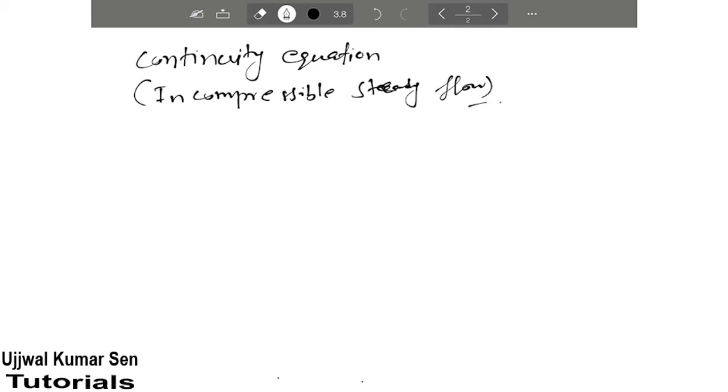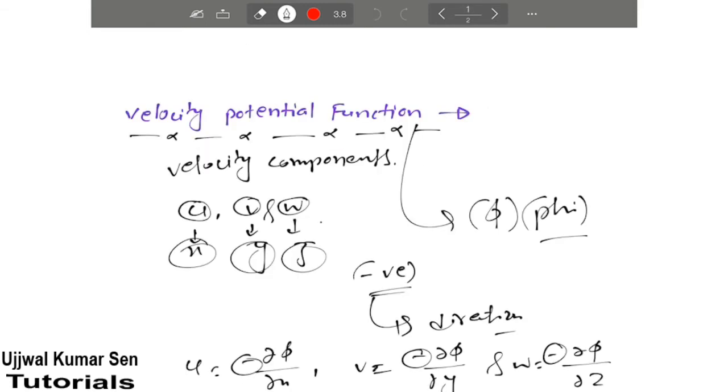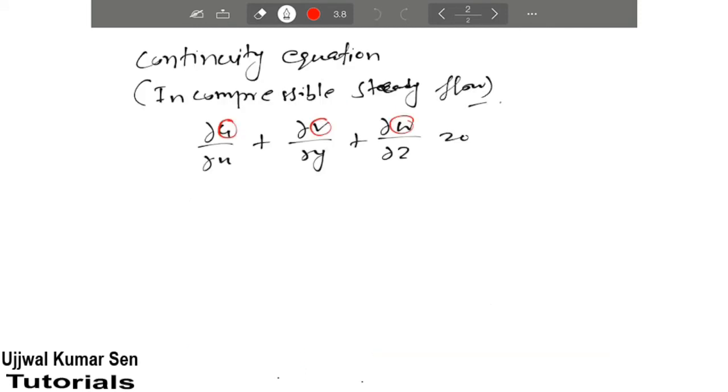We can write curly u upon curly x plus curly v upon curly y plus curly w upon curly z equals zero. Now we are going to write down values of u, v, and w that we stated before.